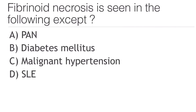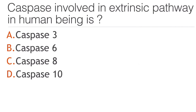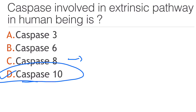Fibrinoid necrosis is seen in all of the following except: polyarteritis nodosa, diabetes mellitus, malignant hypertension, or SLE? It is not seen in diabetes mellitus. In malignant hypertension you get onion peel appearance. The caspase involved in the extrinsic pathway in human beings is caspase-3, caspase-6, caspase-8, or caspase-10? The answer is caspase-10.